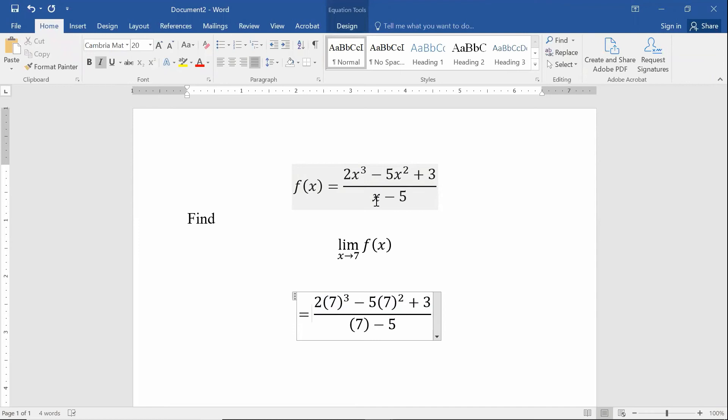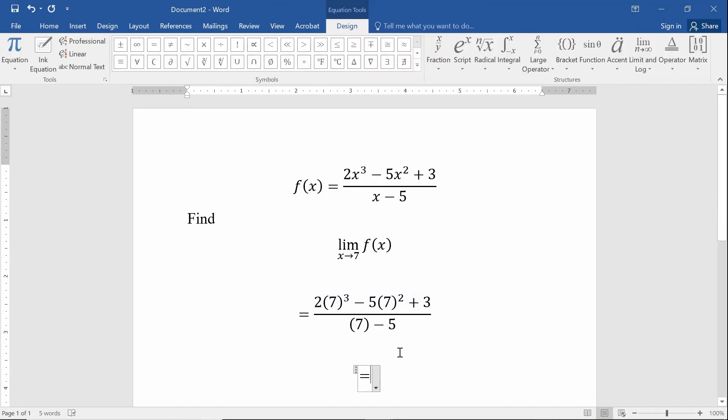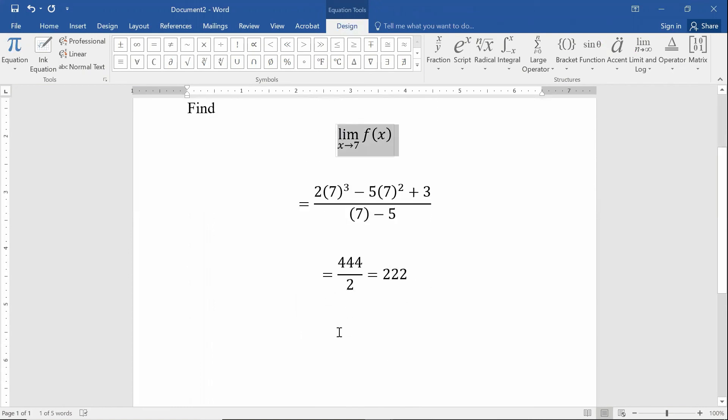So the limit as x goes to 7 of f of x is the fraction 2 times 7 to the third minus 5 times 7 squared plus 3, all divided by 7 minus 5. And if we want to simplify that, the denominator is going to be 2. The numerator is going to be a pretty big number. Yeah, 444, okay, is what I got. Hopefully I typed that into my calculator correctly. But it is just a matter of typing that into your calculator. So I got a limit of 222 for this limit as x goes to 7.